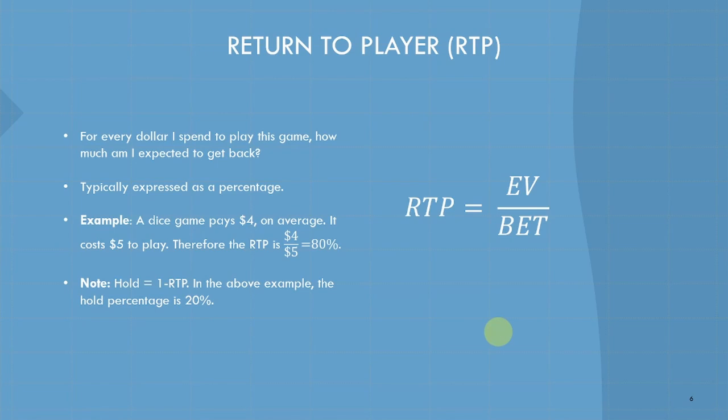Once you understand expected value, it's not much of a leap to understand the first new term that is essential to calculating casino games: RTP. RTP is just the expected value of a game divided by the bet. It's a percentage. It tells us on average, for every dollar we put in, how much we're going to get back. Example: a dice game pays us $4 on average. The game costs $5 to play. We plug it into this formula: $4 average payout, $5 average bet. It has an 80% RTP.